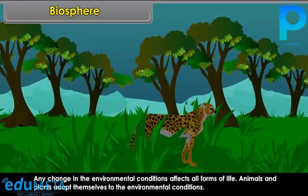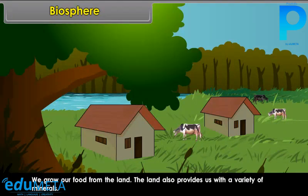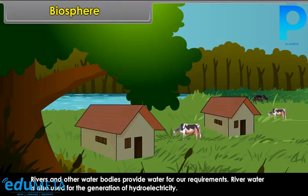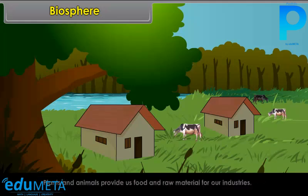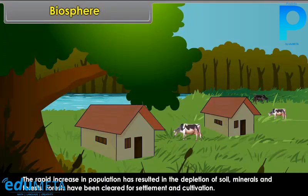Any change in environmental conditions affects all forms of life. Animals and plants adapt themselves to environmental conditions. The earth provides a suitable environment for human beings to live. We grow our food from the land, which also provides us with a variety of minerals. We build our shelter on the surface of the earth. Rivers and other water bodies provide water for our requirements, and river water is also used for generation of hydroelectricity. Plants and animals provide us food and raw material for our industries. However, the rapid increase in population has resulted in the depletion of soil, minerals, and forests.